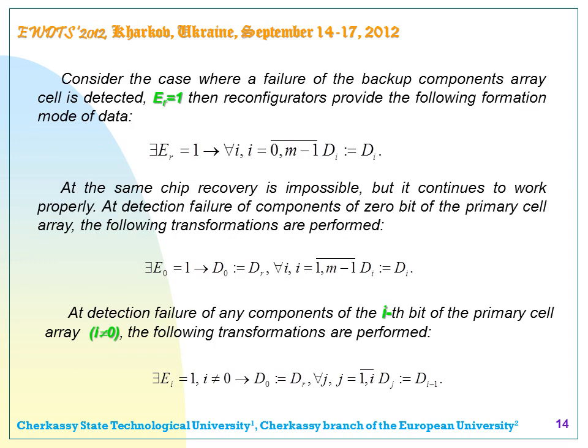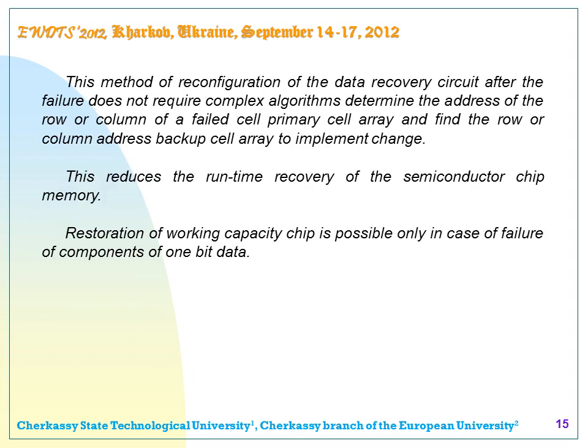Consider the case where a failure of the backup component array cell is detected (ER equals 1). Then reconfigurators provide the following formation mode of data: chip recovery is impossible, but it continues to work properly. At detection of failure of components of the 0 bit of the primary cell array, the following transformations are performed. At detection of failure of any components of the IS bit of the primary cell array where I0 equals 0, the following transformations are performed. This method of reconfiguration of the data recovery circuit after failure does not require complex algorithms — it determines the address of the row or column of the failed primary cell and finds the backup cell array address to implement the change. This reduces the runtime for recovery of the semiconductor chip memory. Restoration of working capacity is possible only in case of failure of components of 1 bit of data.